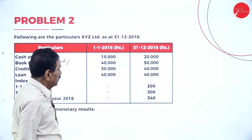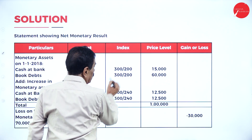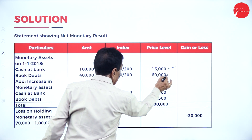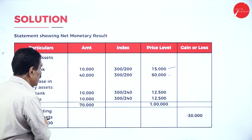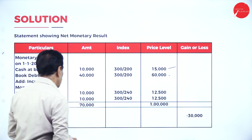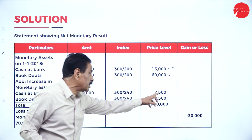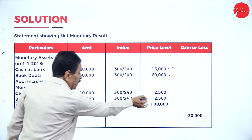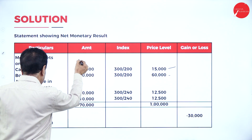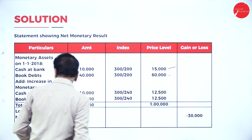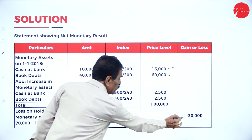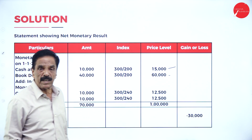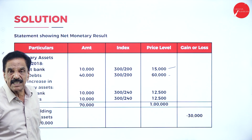This problem is based on assets and liabilities. Monetary asset: cash at bank was 10 lakh, index 200 to 300 — 300 divided by 200 gives 15,000. Book debts debtor 40,000 with index 300 becomes 60,000. Increase in monetary asset: cash at bank 10,000 becomes 20,000, an increase of 10,000 becomes 12,500. Book debts 40,000 becomes 50,000, increase of 10,000 becomes 12,500. Total net assets are 70,000, becoming 1 lakh. Loss on holding monetary assets is minus 30,000.